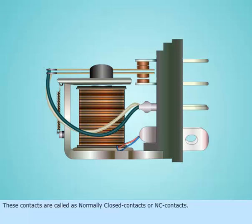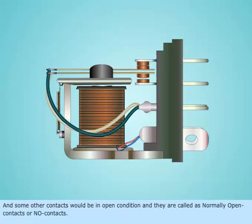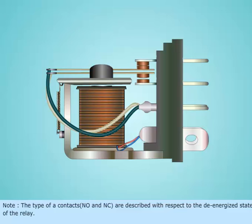These contacts are called as normally closed contacts or NC contacts. And some other contacts would be in open condition and they are called as normally open contacts or NO contacts. Note, the type of contacts NO and NC are described with respect to the de-energized state of the relay.